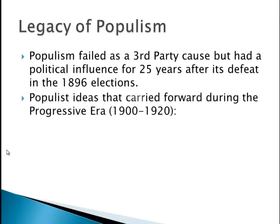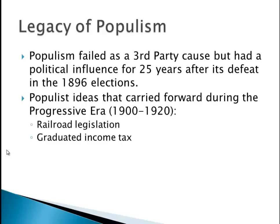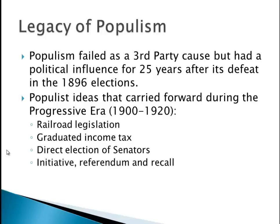Populism leads the way for the Progressive Era, from 1900 to 1920. Ideas the progressives carried forward: railroad legislation, a graduated income tax — the 16th Amendment, direct election of senators — the 17th Amendment (senator starts with SE, 17 starts with SE), and the initiative, referendum, and recall. Initiative is when individuals can propose laws to the government. Referendum is when individuals can vote on laws. A recall is when you can get rid of an elected official — most of that is done on the state level.